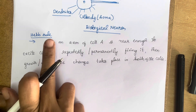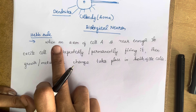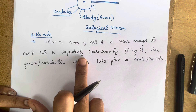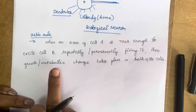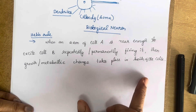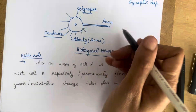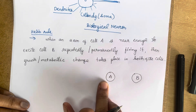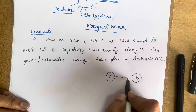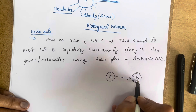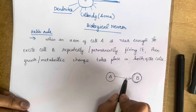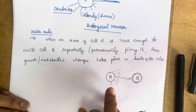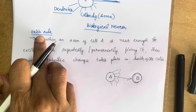The definition of the Hebb rule is: when an axon of cell A is near enough to excite cell B repeatedly or permanently, firing it, then some growth or metabolic change takes place in both cells. So when neuron A's axon is trying to excite neuron B, there will be some metabolic changes in the synaptic gap of both cells. This is what he identified and he came up with the Hebb rule.